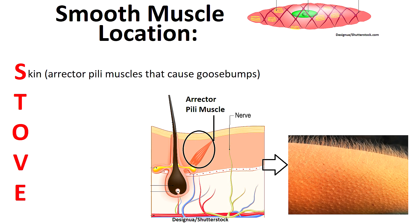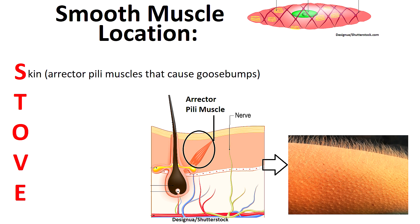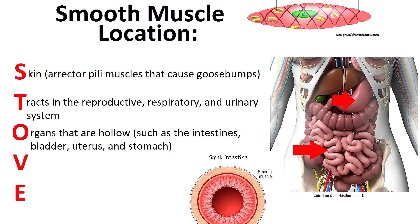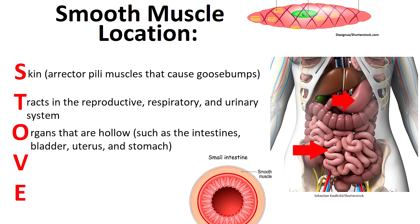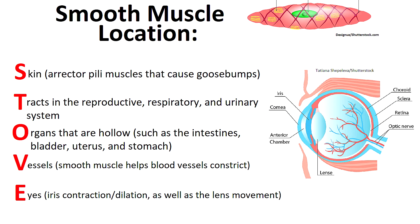S stands for skin, specifically those erector pili muscles that cause goosebumps. T stands for tracts, found in the reproductive, respiratory, and urinary systems. O stands for organs that are hollow, such as the intestines, the bladder, the uterus, and the stomach. V stands for vessels — smooth muscle helps blood vessels constrict. And E stands for eyes, specifically helping with iris contraction as well as movement of the lens.